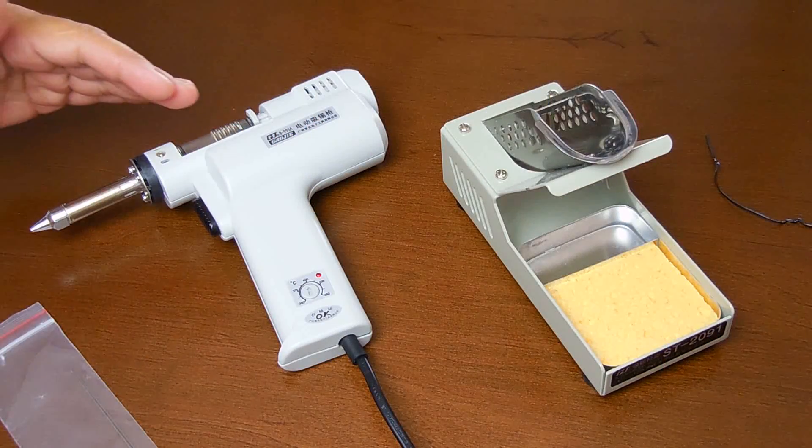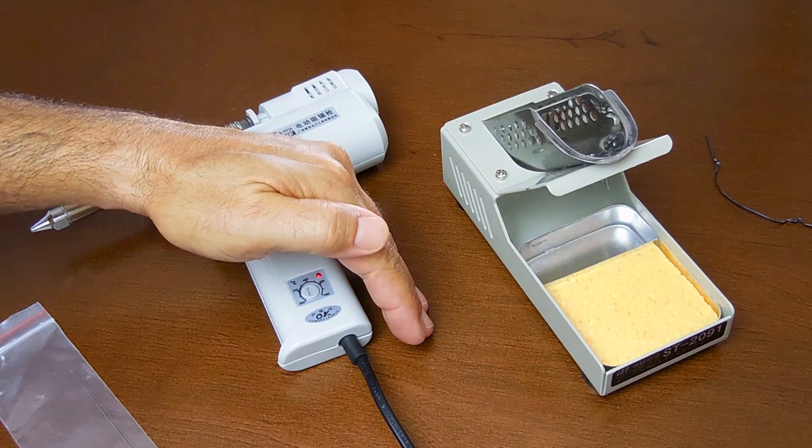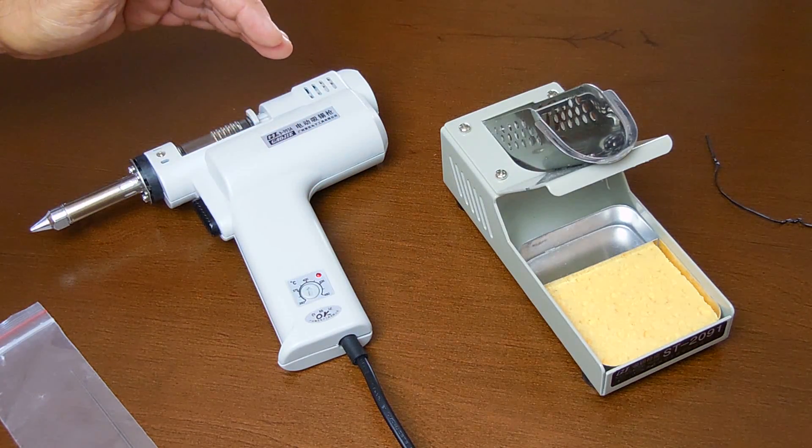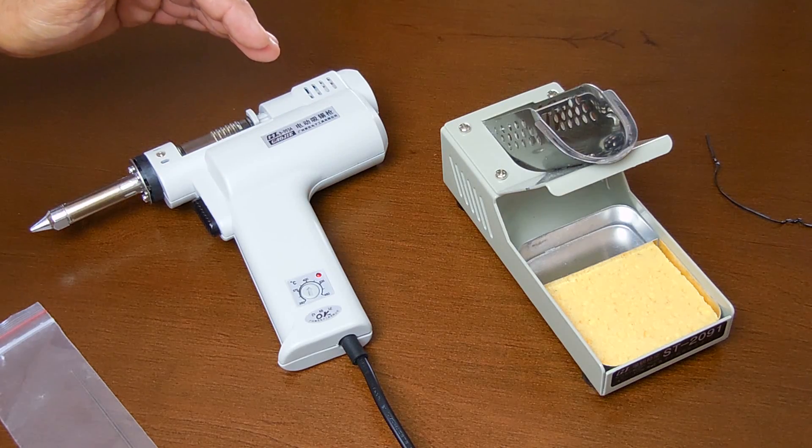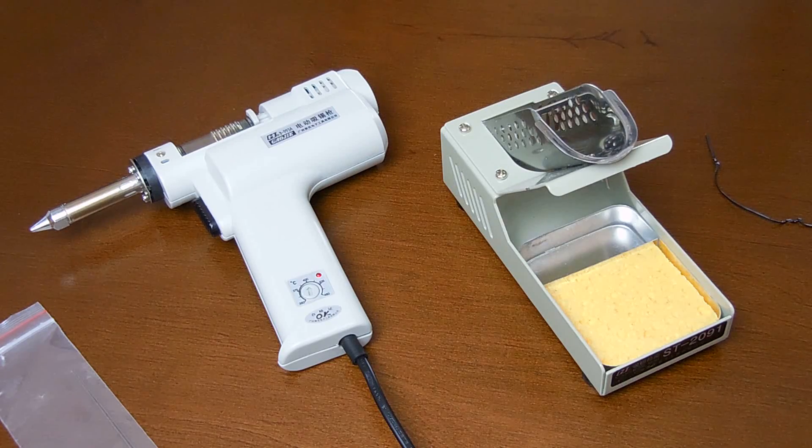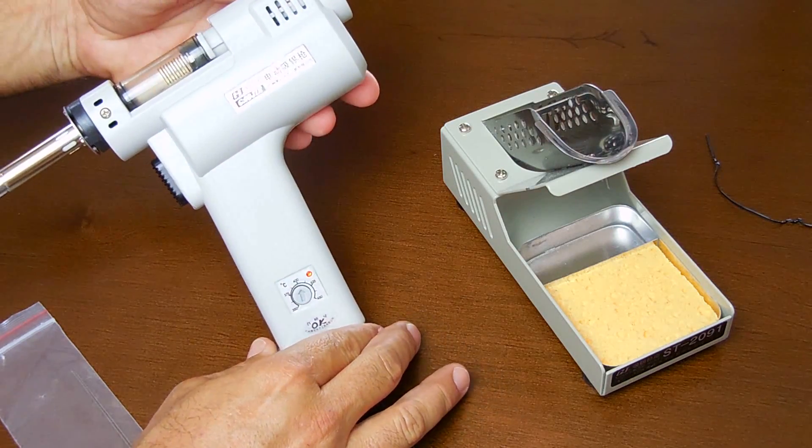Once this unit is plugged in and powered up, you can see there's a red LED that's active. That indicates that the gun is heating to the proper temperature. Once the proper temperature has been reached, this LED will no longer be illuminated.